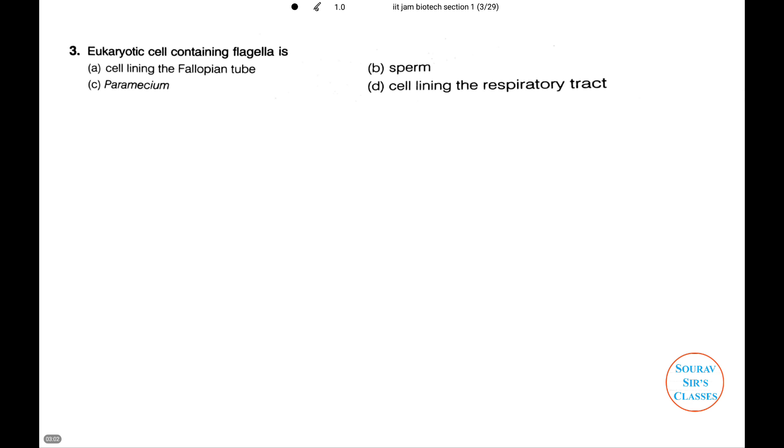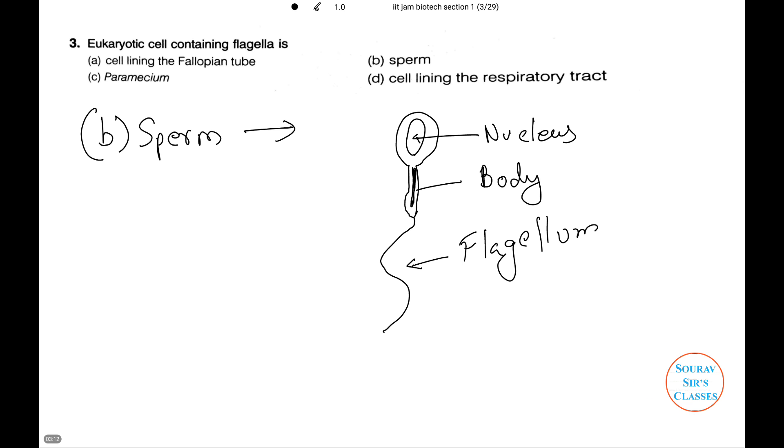Eukaryotic cell containing flagella is among the four options. The answer will be number B, sperm. A sperm consists of a head, the neck, the middle piece, and a tail or the flagellum. This flagellum causes the flagellar movement enabling the sperm to assist into the female reproductive tract.